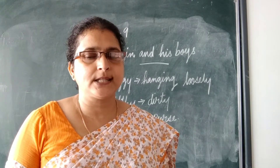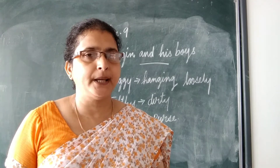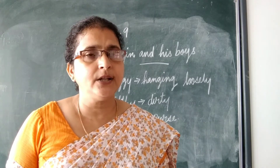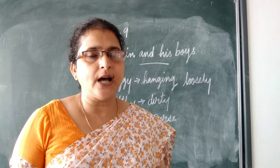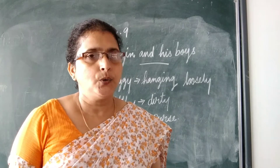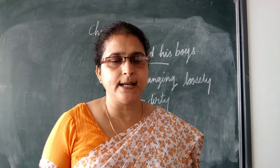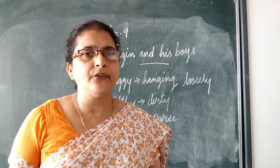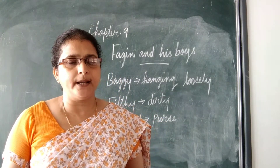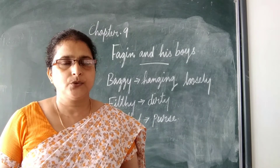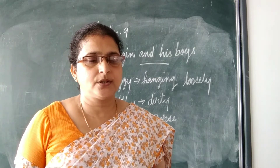Oliver Twist was an orphan — one who has lost his parents, his mother and father, and is living alone. His mother died soon after his birth. He lived in the workhouse owned by the parish. Parish means the church. So he was living in an orphanage run by the church.